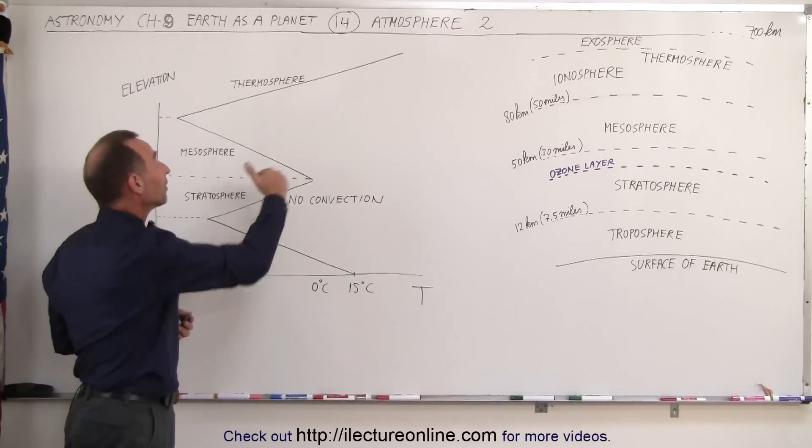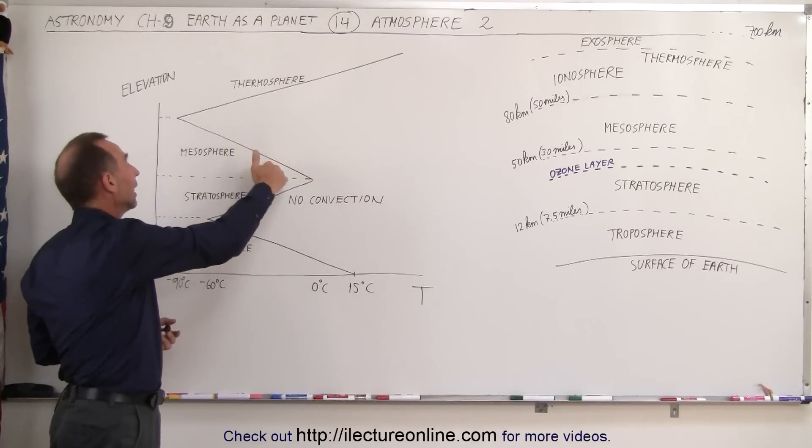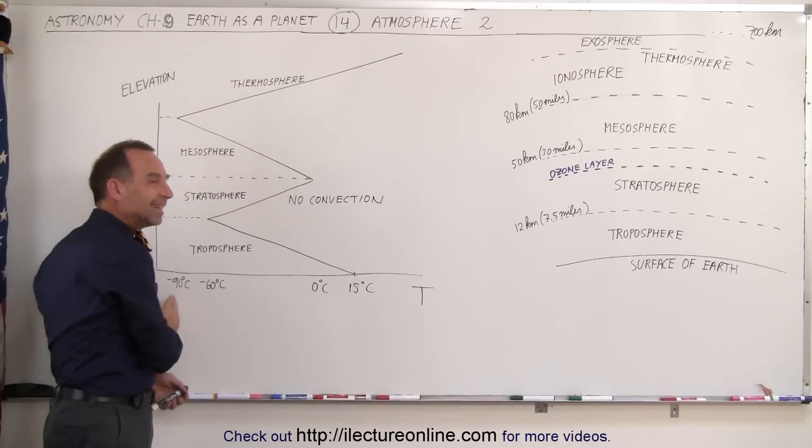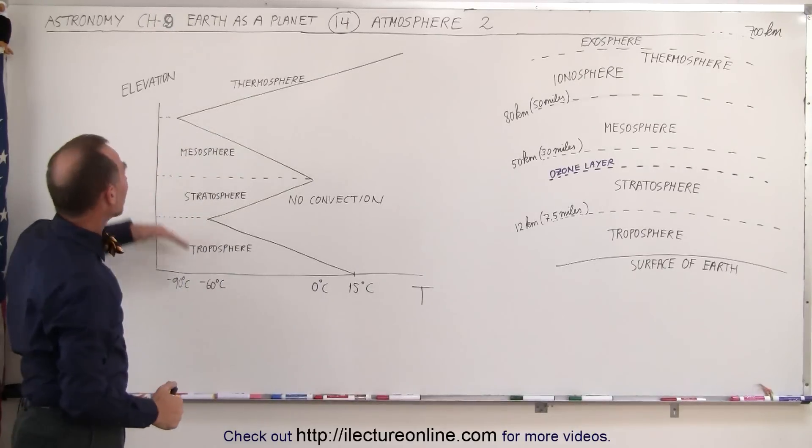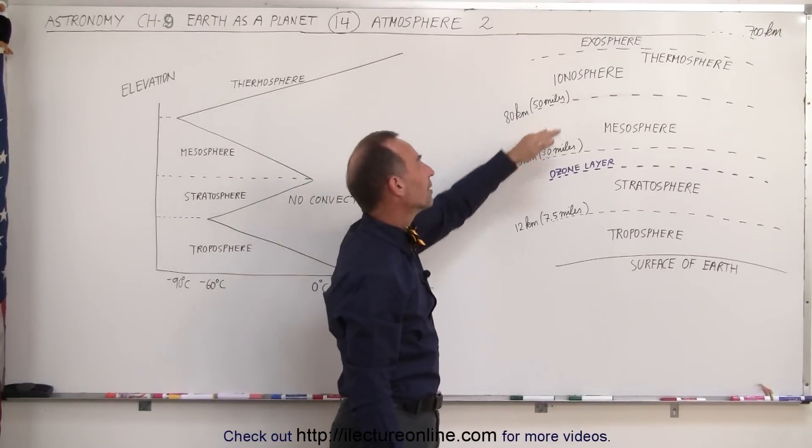Then if you go above that layer where the ozone layer is not in existence, you can see the temperature begins to drop again and it drops all the way down to about minus 90 degrees centigrade by the time we reach the very top of the mesosphere, which is at a height of about 80 kilometers or 50 miles.